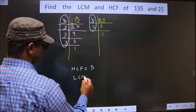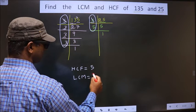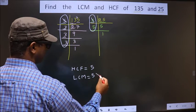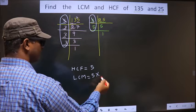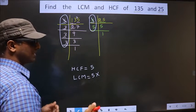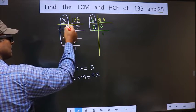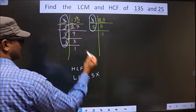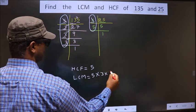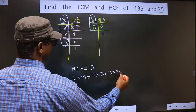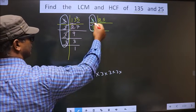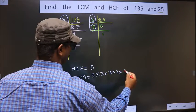Now, LCM. Whatever HCF you got, you write that, that into. We should multiply the left out numbers. Here, the left out numbers are 3, 3, 3. So, multiply with that. And here, the left out numbers are 5. So, into 5.